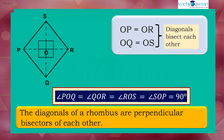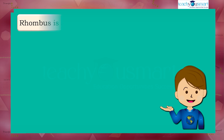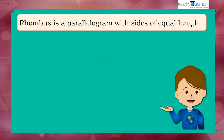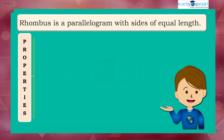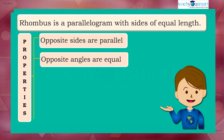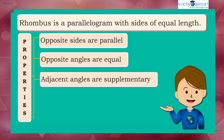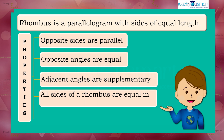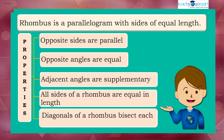But they are not necessarily of equal length. Thus, a rhombus is a parallelogram with sides of equal length. The important properties of a rhombus are: first, opposite sides are parallel; second, opposite angles are equal; third, adjacent angles are supplementary; fourth, all sides of a rhombus are equal in length; fifth, diagonals of a rhombus bisect each other at right angles.